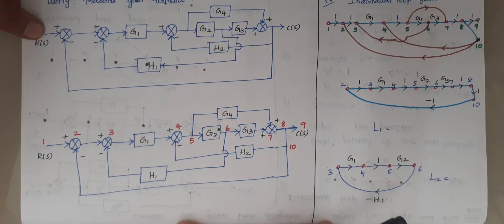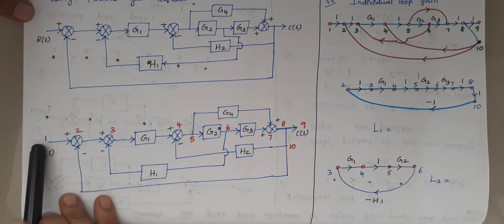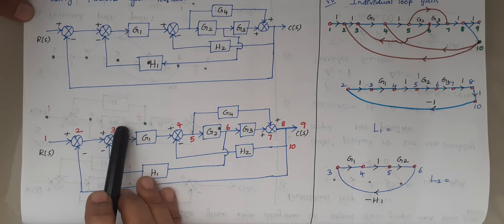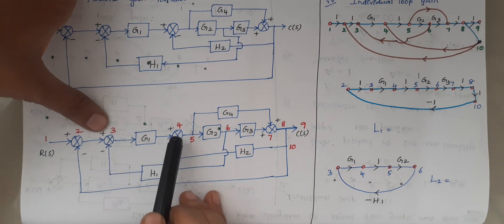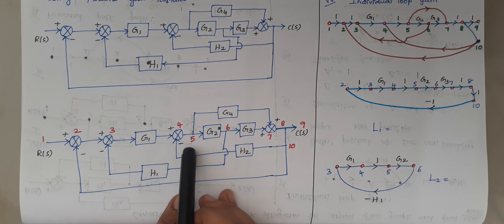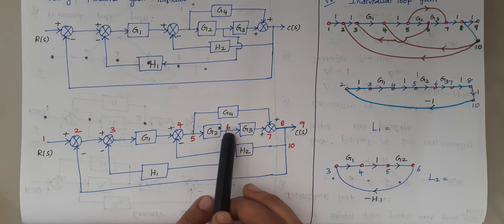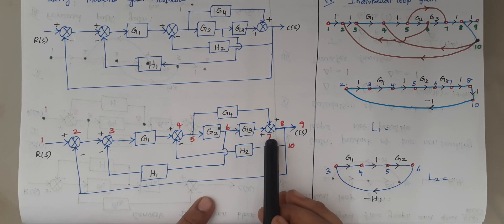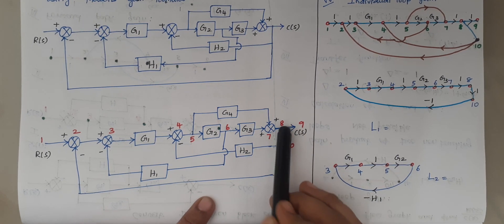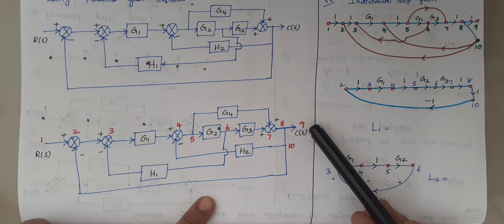So when you look carefully, R(S) is your node 1, this summing point is node 2, this summing point node 3, here node 4, and here there is a branch point. I am taking this as node 5, another branch point node 6, then another summing point node 7, here there is a branch point that is node 8, and finally the output is taken as node 9.